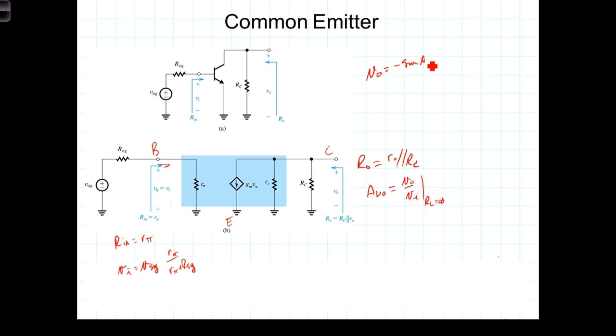V in times the parallel combination of R zero with R sub C. So A V zero then is equal to negative G sub M times R zero in parallel with R sub C.